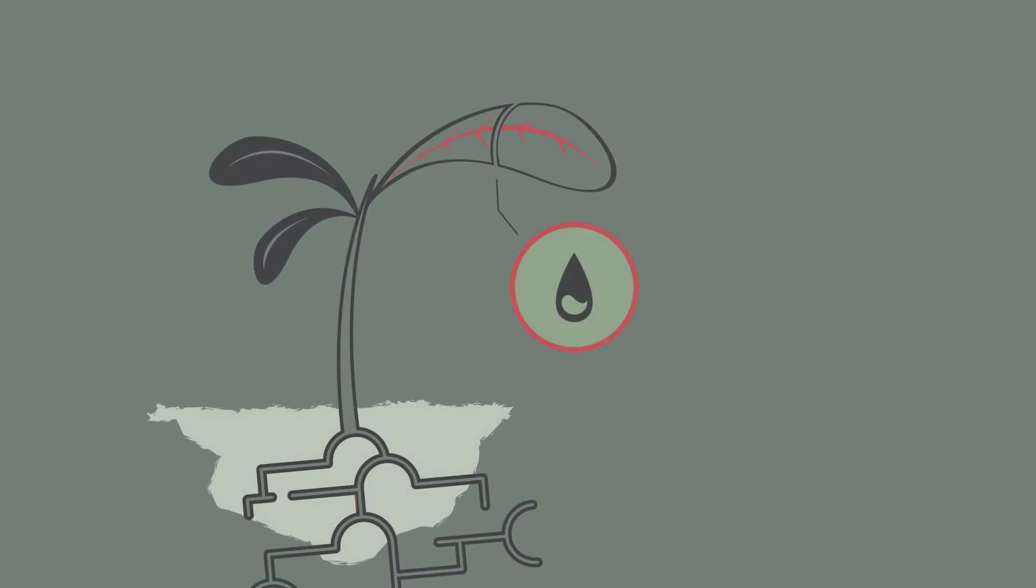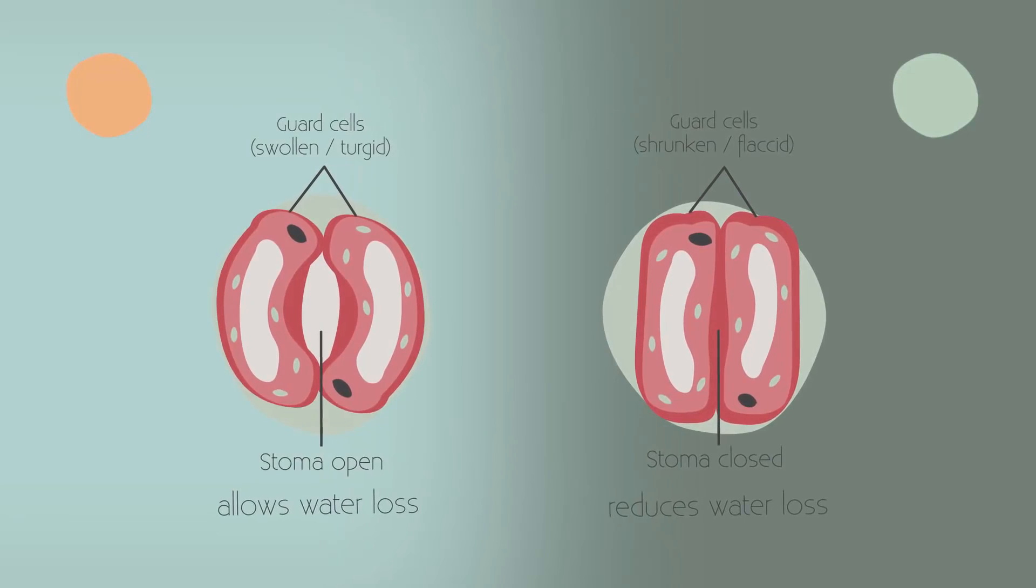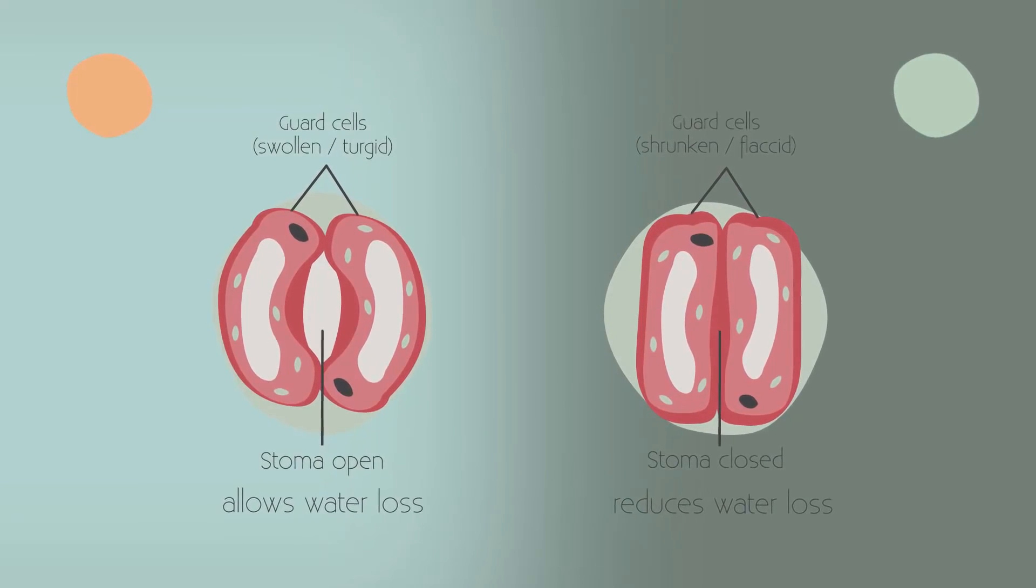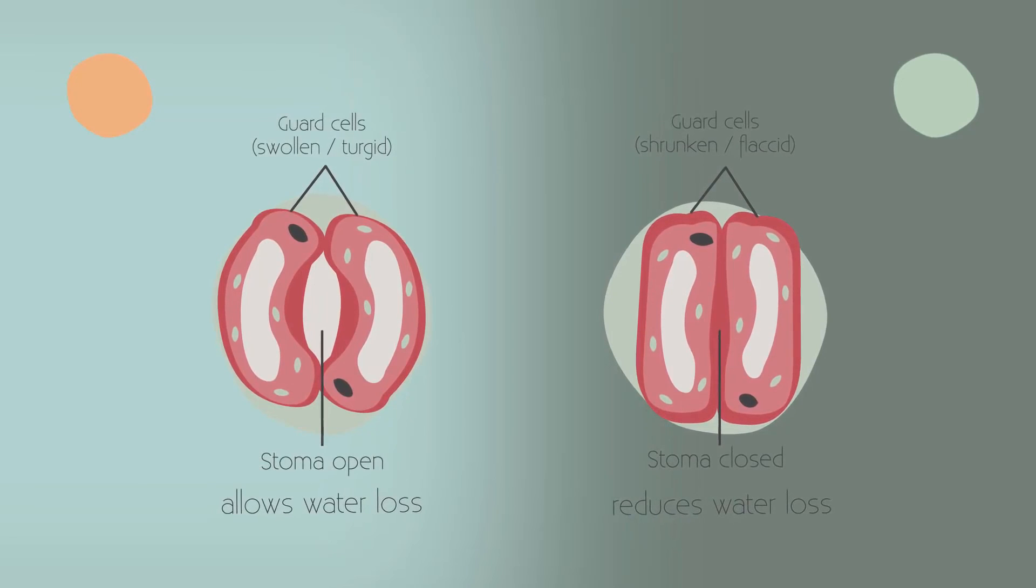So now you know about water movement through the plant, how it flows up the xylem and gets pulled along the transpiration stream due to the transpiration pull. Remember, the plant has methods to control water loss by closing the stomata, which is based upon how flaccid or turgid the guard cells are.